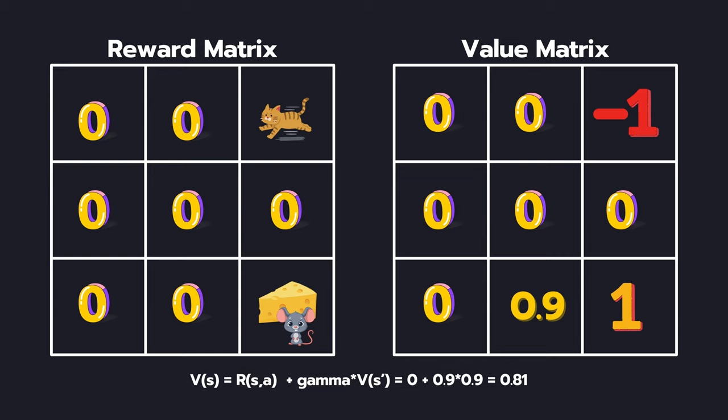In this case, we know that R(s,a) is 0 and gamma is 0.9, and the value of the next state is also 0.9. So, the value of our state becomes 0.81.